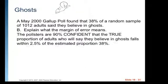Explain what the margin of error means. The pollsters are 90% confident that the true proportion of adults who will say they believe in ghost falls within 2.5% of the estimated proportion 38%. So it's the amount of leeway that we have to have on either side of our estimate in order to obtain our level of confidence.